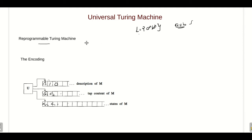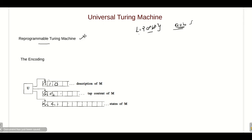Similarly, there should be a Turing machine that is also reprogrammable. If we design a single Turing machine, it must be able to recognize languages, perform operations, and recognize other languages as well. That kind of Turing machine is called a Universal Turing Machine. Universal Turing machines are reprogrammable Turing machines.